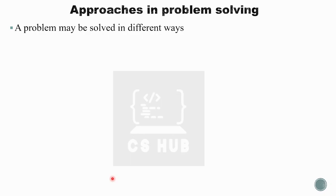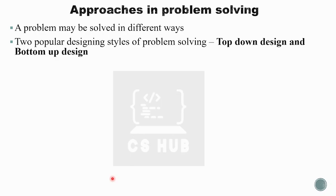A problem may be solved in different ways. We learn two types of problem solving and designing styles. Problem solving techniques are normally top-down design and bottom-up design. In computers, there are two types of problem solving techniques: top-down design and bottom-up design.